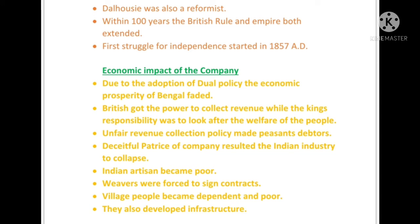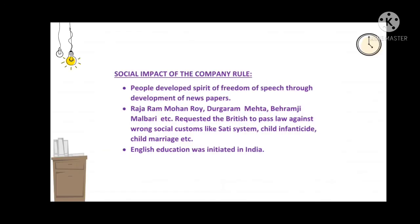Before the company arrived in India, Indian villages were very self-reliant and not dependent on anyone, but as the British came, they became very poor and dependent. However, developments like the first railway line between Mumbai and Thane, steamer service between India and England, and development of ports in Mumbai, Madras, and Chennai did take place during the rule of the East India Company.